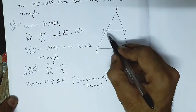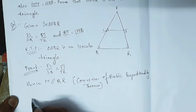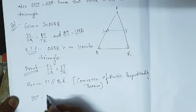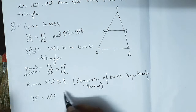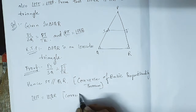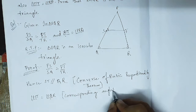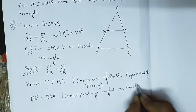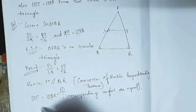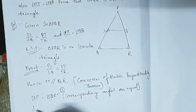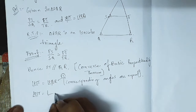Since ST is parallel to QR, angle PST equals angle PQR, because corresponding angles are equal. This is our first equation.